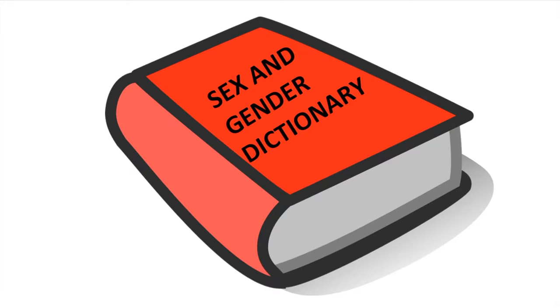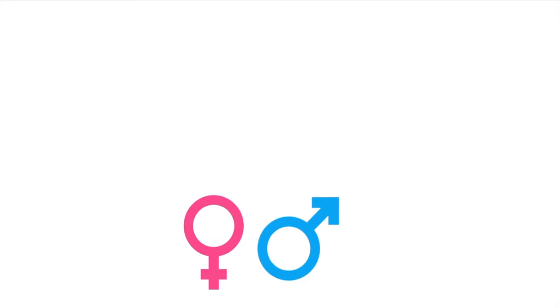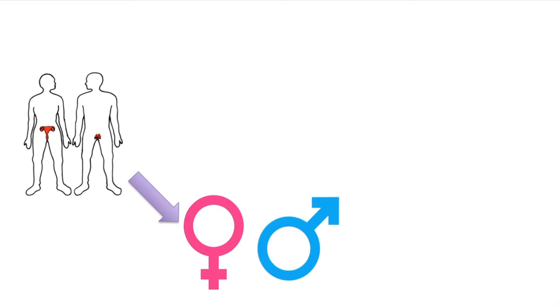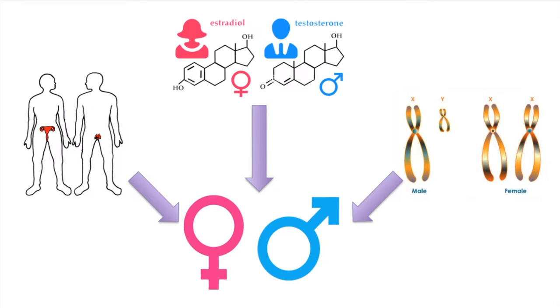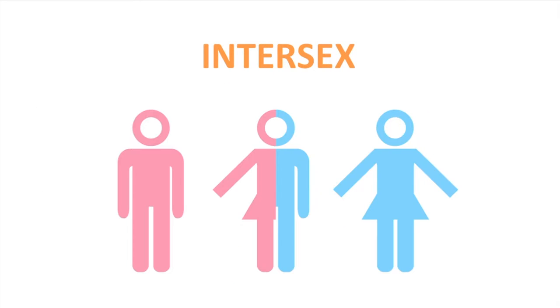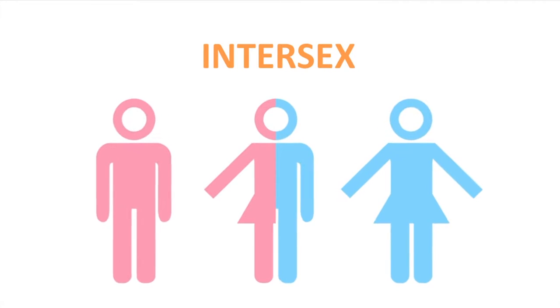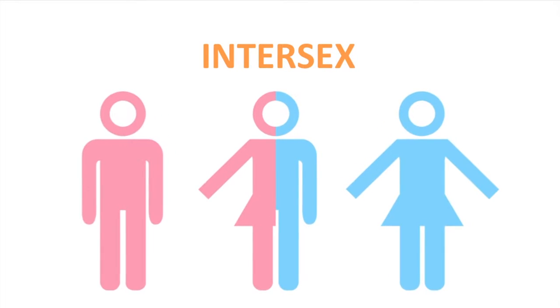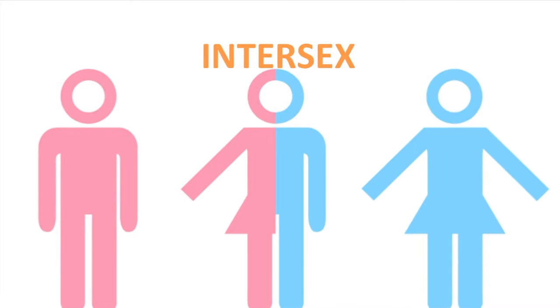Here are some terms that you would need to know. Sex is the biological status that's either male or female, based on reproductive organs, hormone prevalence, and chromosomes. There are also people who are intersex. They may have both male and female reproductive organs, over or under production of sex hormones, abnormalities with sex chromosomes, or other conditions.